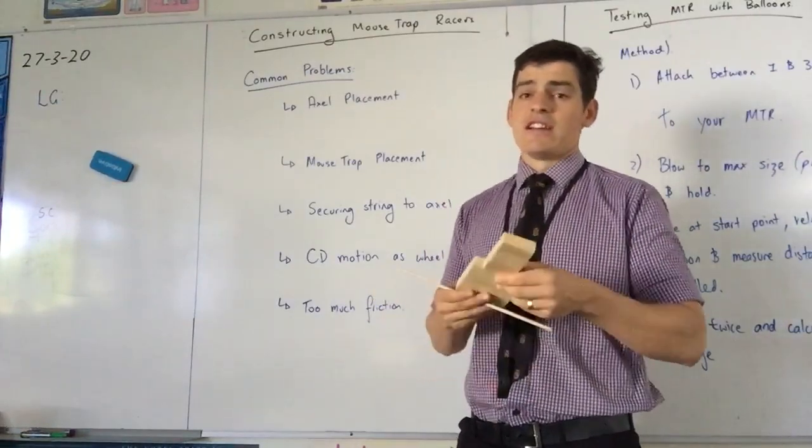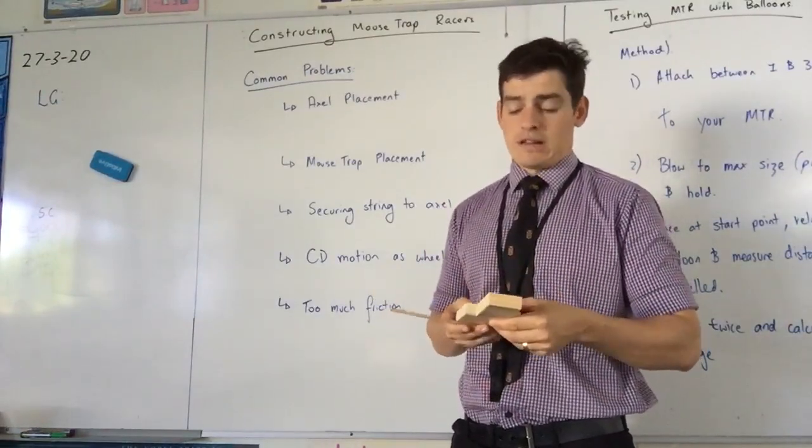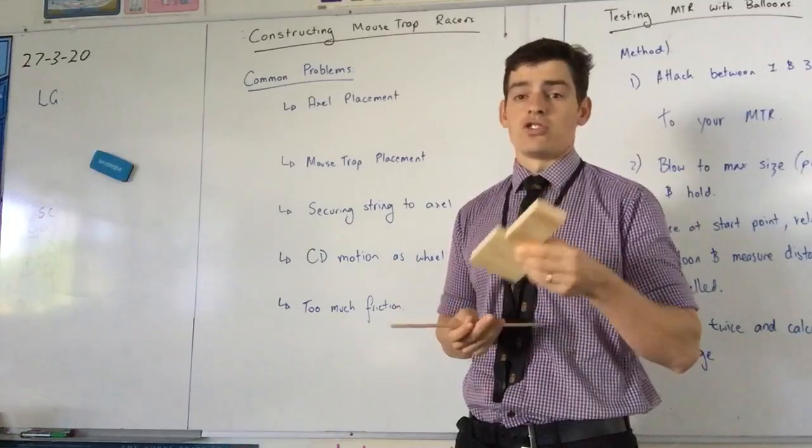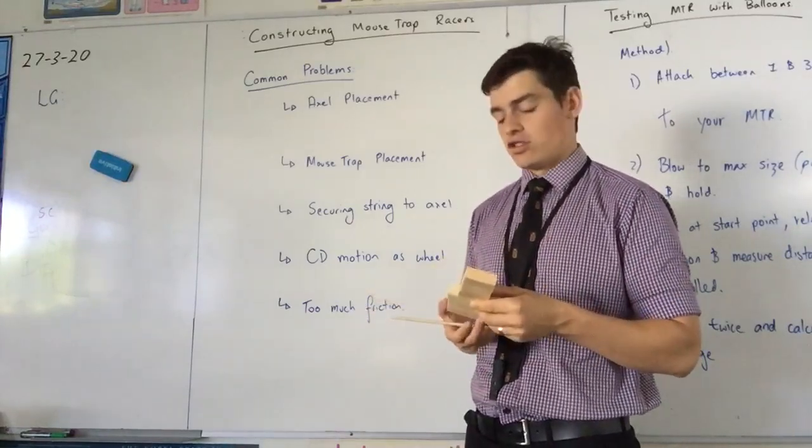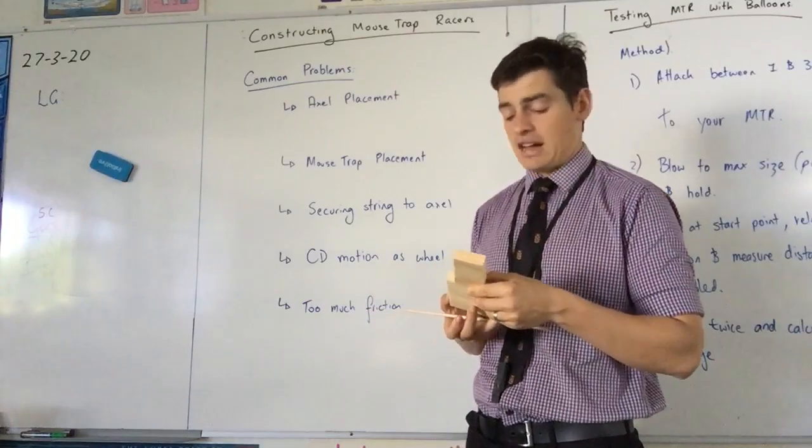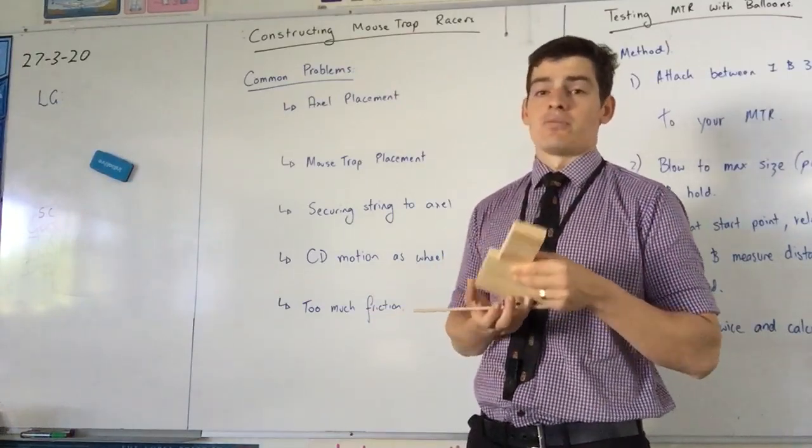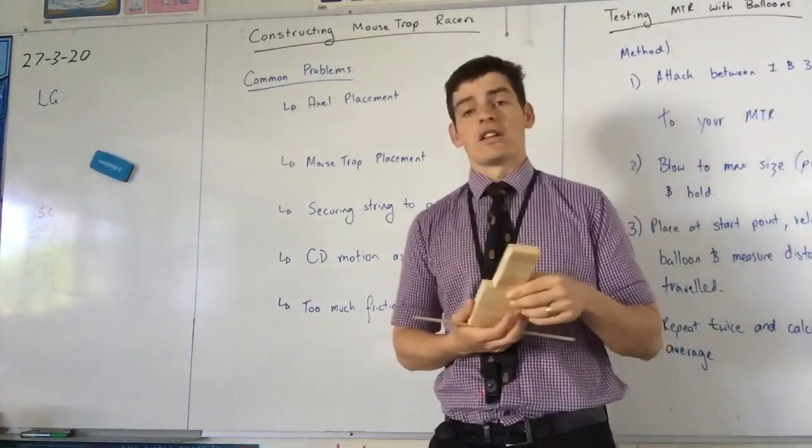And the last one's too much friction. You might want to put your CDs or your wheels pretty close to your body of your mousetrap. Be aware if they're too close and they're too tight and they're actually physically hugging the mousetrap racer, the body of the mousetrap racer, then you're unlikely to get a lot of motion.